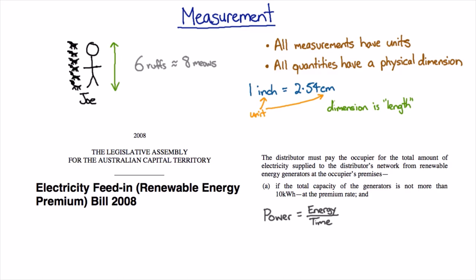Kilowatt hours does come up in electricity bills quite a lot. If we just rearrange this equation, we can see that if we multiply both sides by time, then the energy you get is just the power times the time.